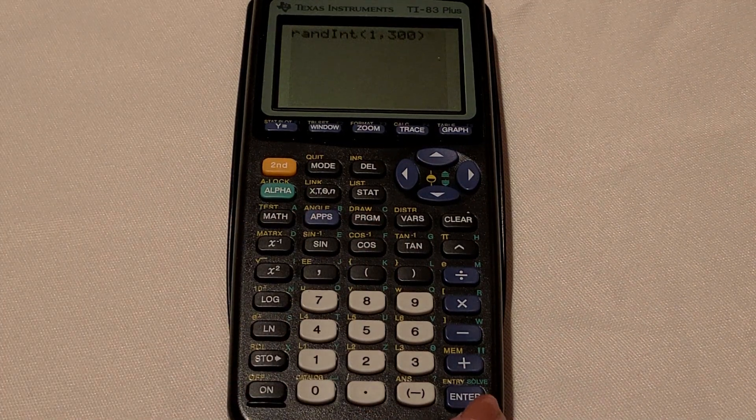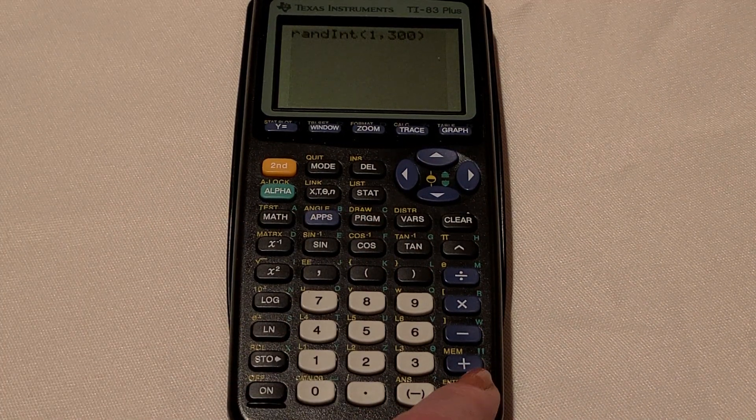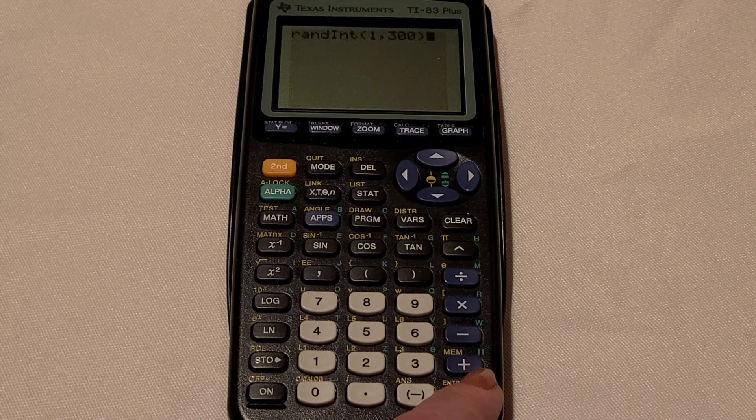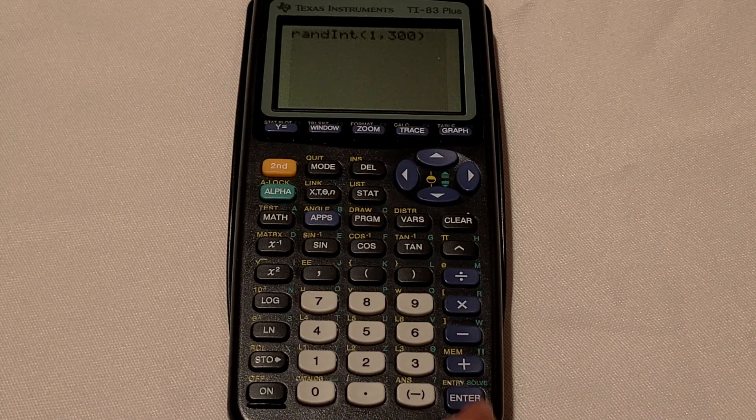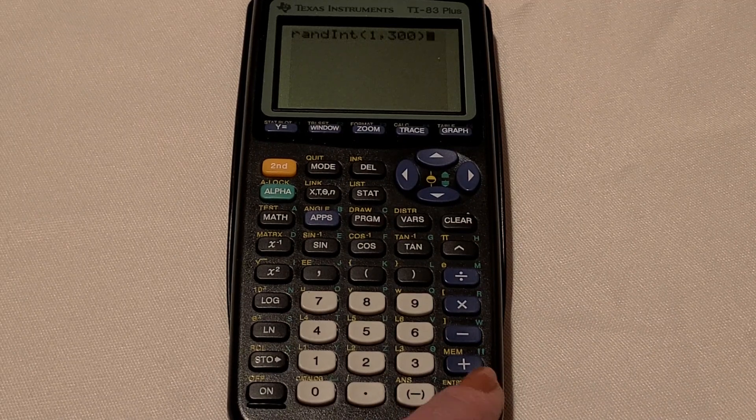Now every time I hit Enter, I'm going to get a random number. We can do 5. I don't want to have to do 30 for you. But if I hit this Enter button 30 times, I'll get 30 random numbers. So here's 5.